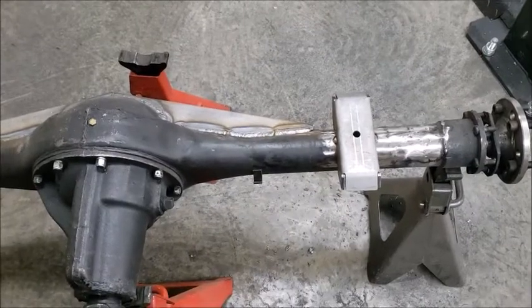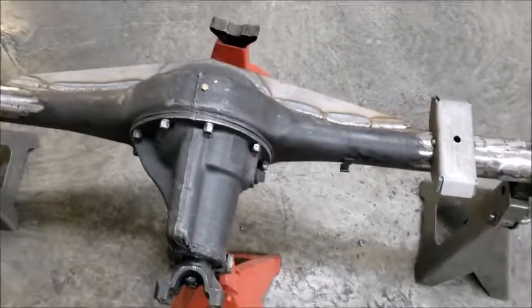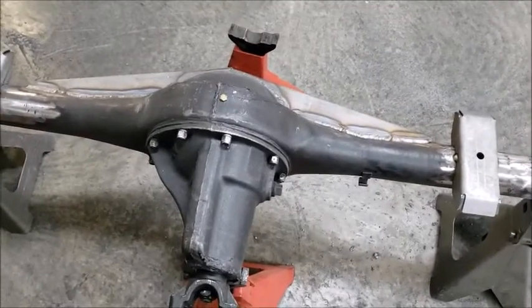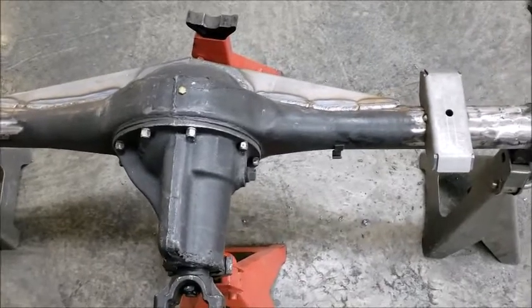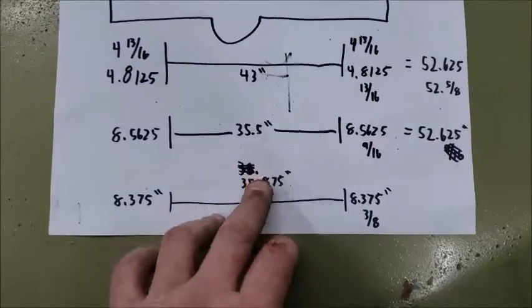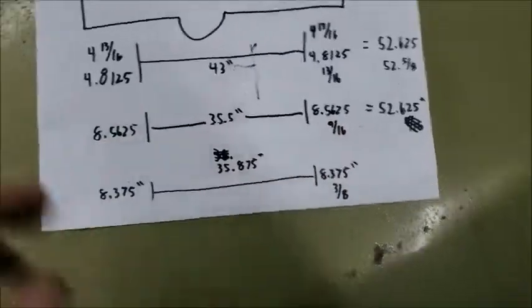So moving on, I am not an expert, nor do I claim to be. Sometimes you make things more complicated than they have to be. Why do anything besides put it at 35.5 center to center? That makes it a lot easier, right? You start splitting hairs and figuring things out. I started doing a bunch of things and I was like, well, you know, 35.5, that's 8 9/16 on both sides. Why not go there? So that's what I did.